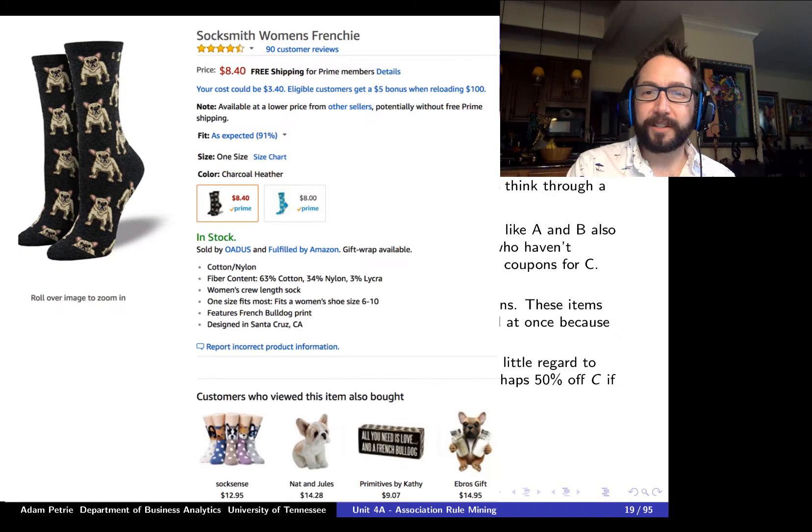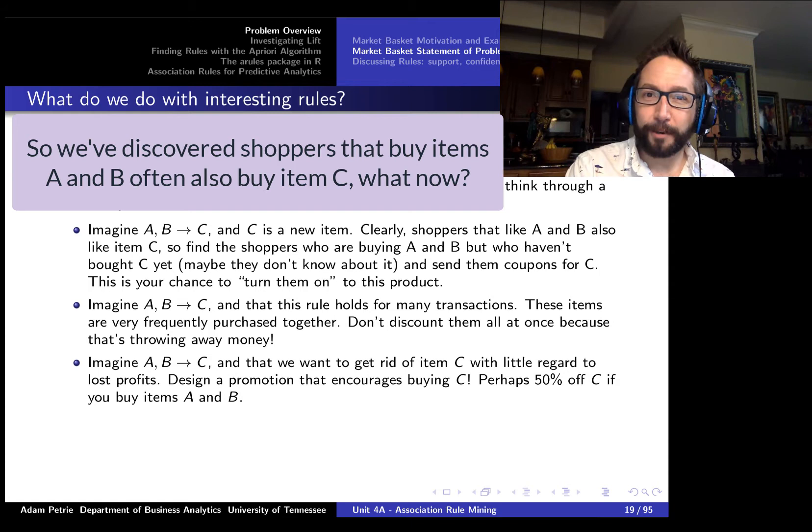So if we go back to the original problem, someone goes on to amazon.com, they look for Frenchie socks. What other items should be suggested to this individual? So if we do a market basket analysis and we find out that if someone has Frenchie socks and say a Frenchie stuffed animal in their browsing history, maybe those are items A and B, then they tend to also add Frenchie t-shirts to their shopping carts. What do we actually do with those sorts of rules? What if we find a rule like if a shopper purchases items A and B, then it's relatively likely that they're also going to purchase item C? Well, here are a few strategies.